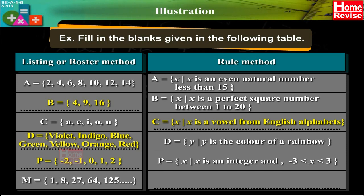Roster method: M = {1, 8, 27, 64, 125, ...}. Rule method: M = {x : x is a cube of a positive real number}.